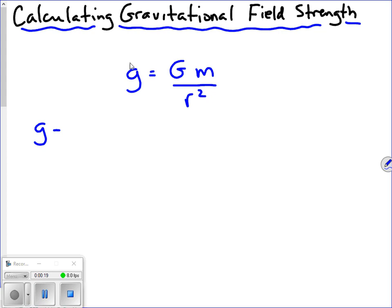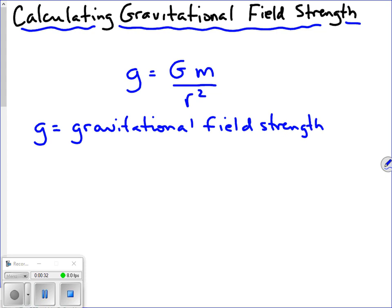Little g is the gravitational field strength. Gravitational field strength is measured in units of newtons per kilogram. A newton is the unit of force — a push or a pull on an object — and per kilogram refers to the mass of the object generating the gravitational field, like a planet. In most examples, that would be the mass of the Earth in kilograms.